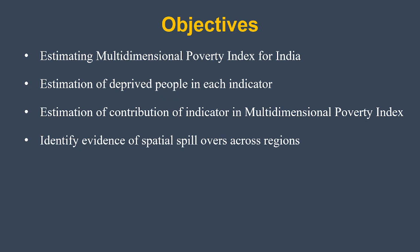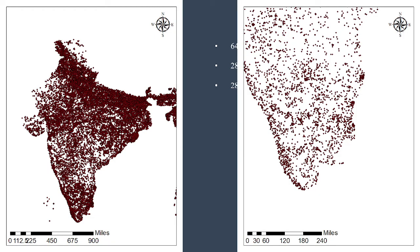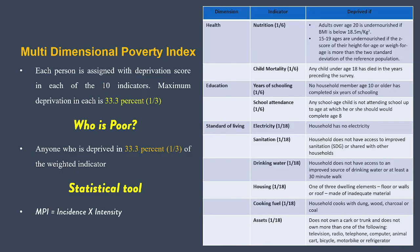Based on this context, analytical work has been done to estimate the multi-dimensional poverty index of India, including the proportion of deprived people in each indicator and the contribution of each indicator to the MPI. The analysis uses secondary data, observations, and district-level clusters across India, representing groups of people from whom the data has been collected.